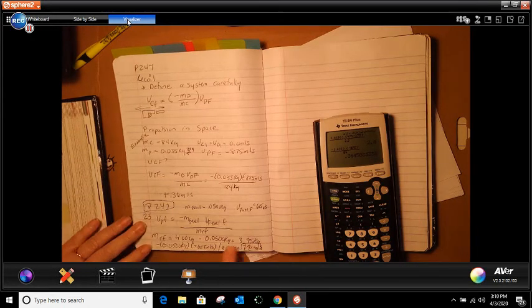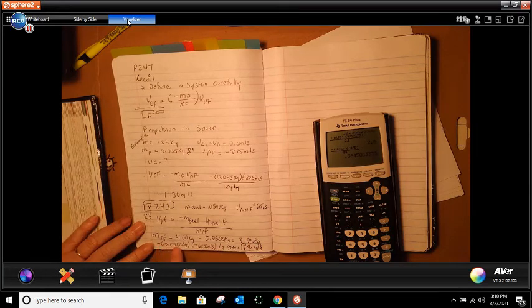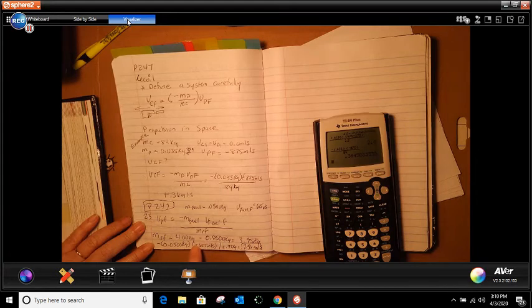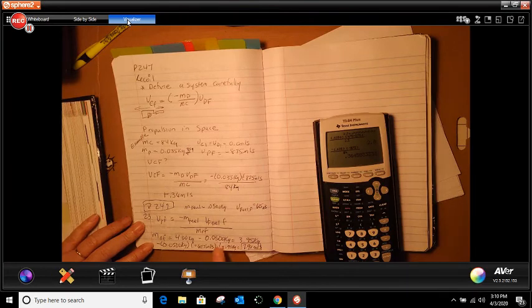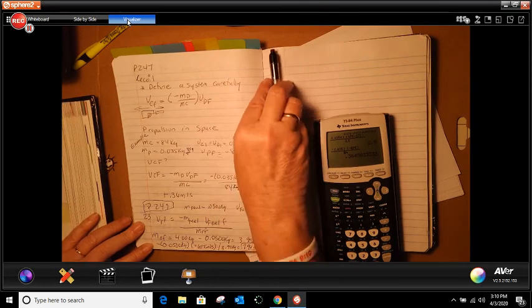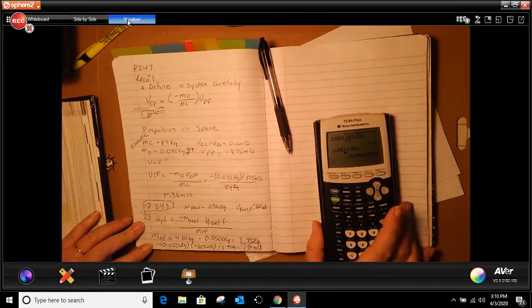What is the velocity of the rocket after the fuel is burned? So, I took the negative 0.50 kilograms. I times it by the negative 625 for the fuel. I divided that by the difference in those two. And I got 3.95.